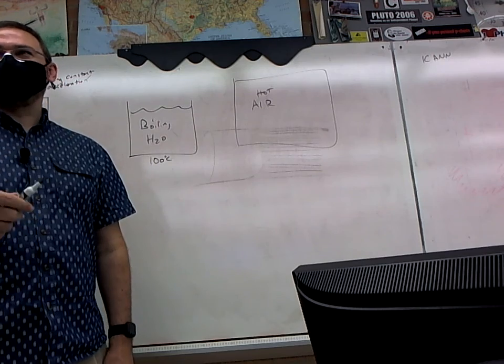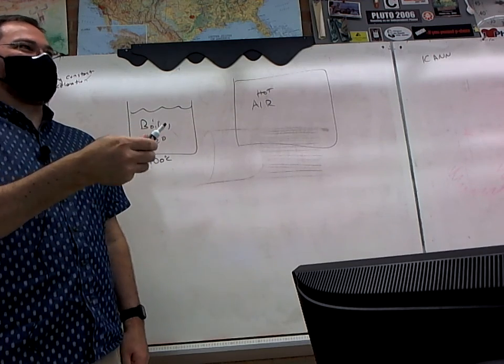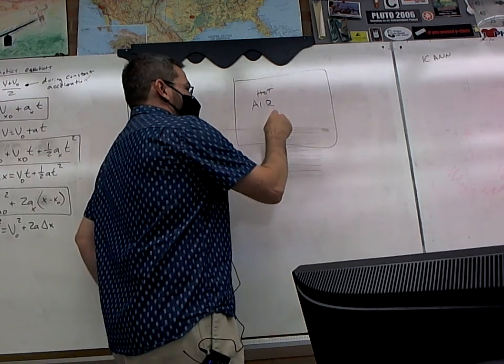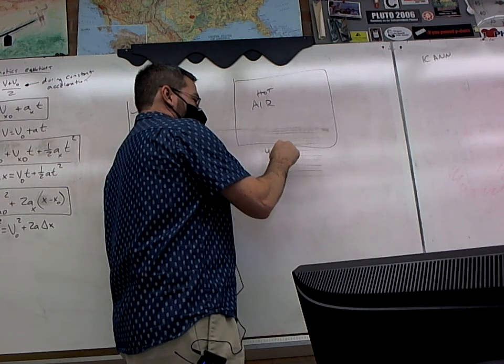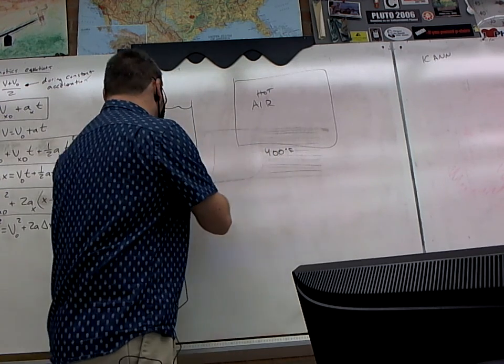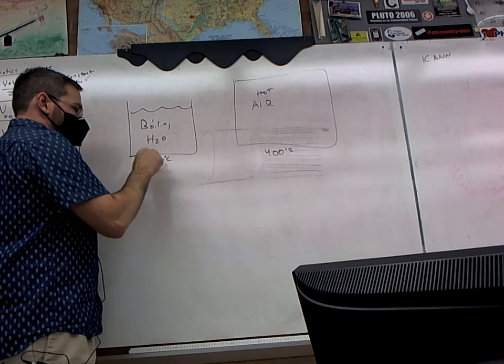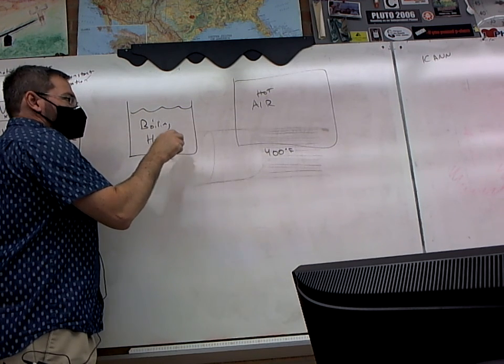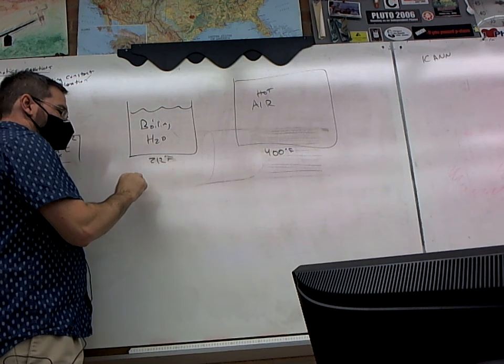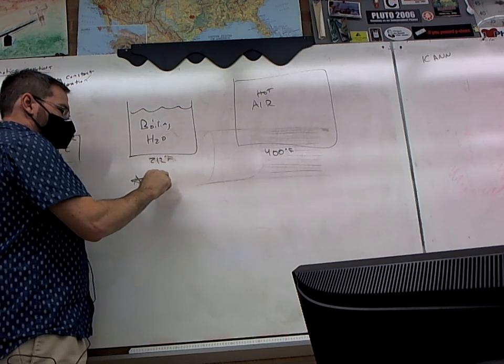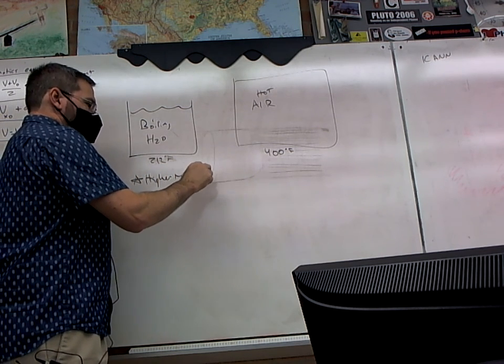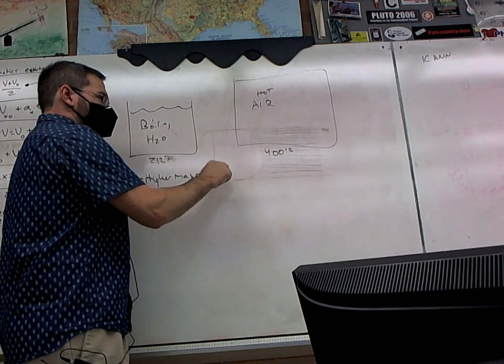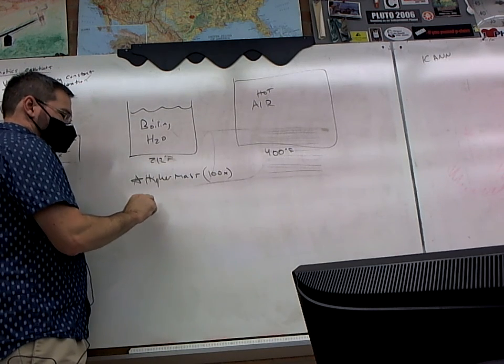The hot air at 400 degrees, or 400 degrees Fahrenheit. Well, I'll just write 212 degrees Fahrenheit. So the water has a higher mass, maybe like 100 times the mass of the air in the oven, and also has a higher specific heat.